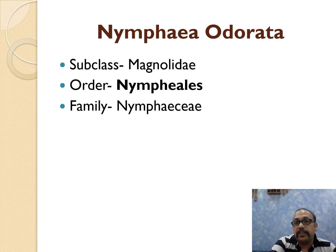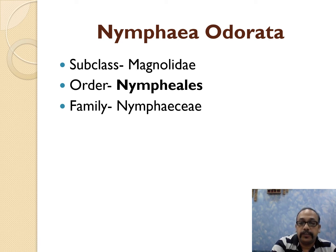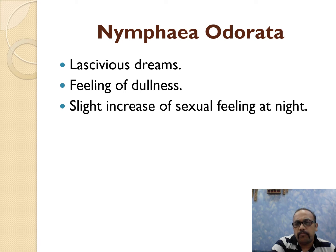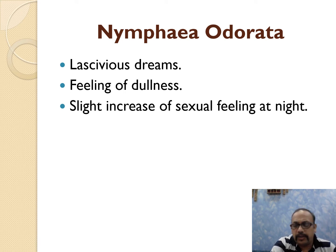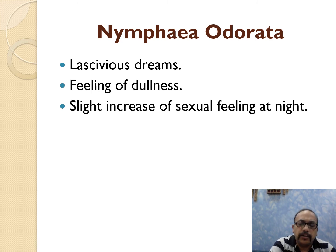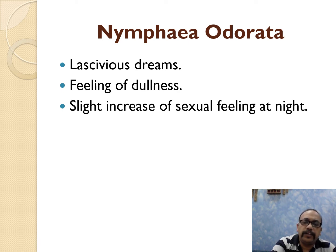The second remedy is Nymphaea odorata, from the same order Nymphials, and the family is Nymphaeaceae. Not much literature is available for this remedy — it is a very short remedy. I found just three rubrics and three symptoms about this: there are lascivious dreams, feeling of dullness, and slight increase of sexual feeling at night, especially in females.